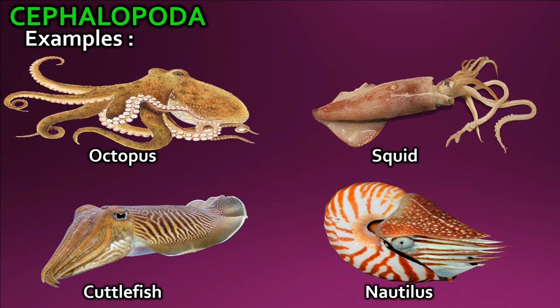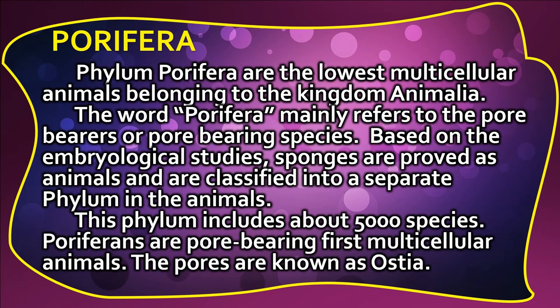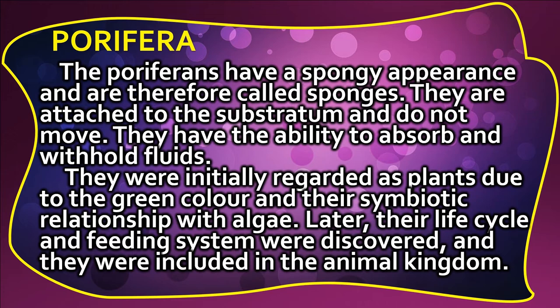Phylum Porifera are the lowest multicellular animals belonging to kingdom Animalia. The word 'porifera' refers to pore-bearing species. Based on embryological studies, sponges are proven animals classified into a separate phylum containing about 5,000 species. Porifera are pore-bearing, first multicellular animals; the pores are known as ostia. They are attached to the substratum and do not move; they were initially regarded as plants due to their green color and symbiotic relationship with algae, until their life cycle and feeding system were discovered.